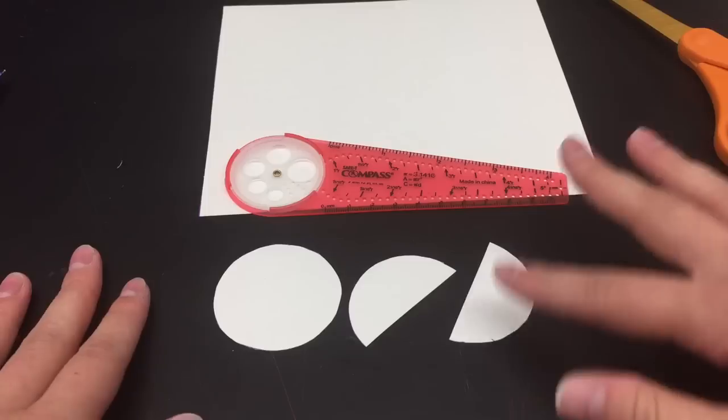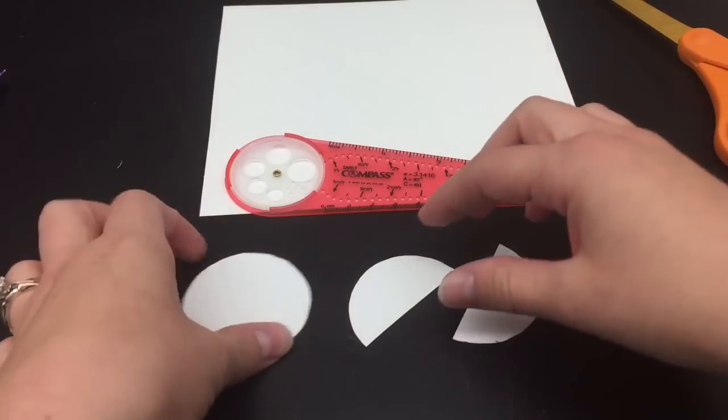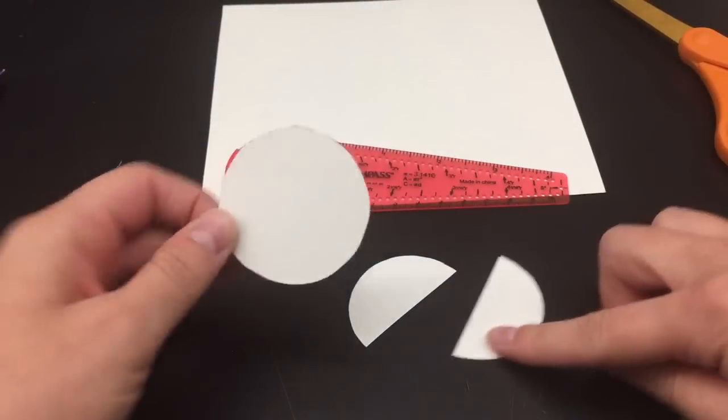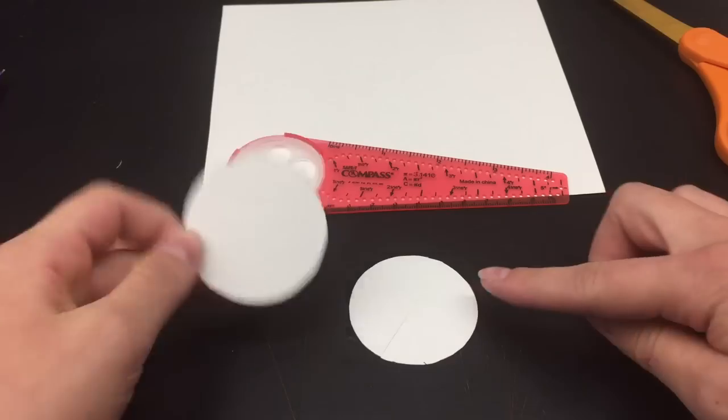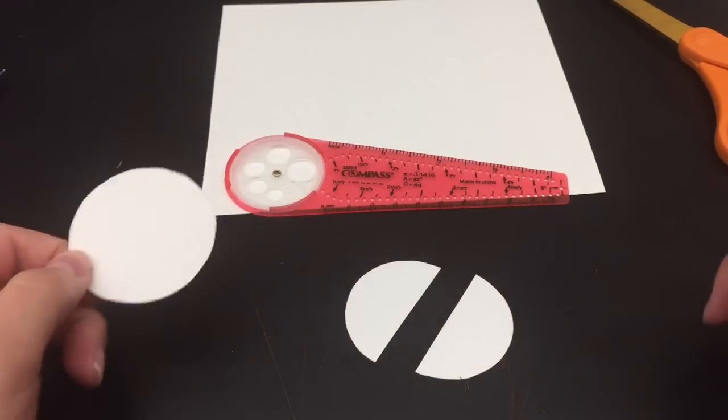This video is going to show you how to make a half of a ball. For the half of a ball, you need one full circle and then one circle that is the exact same shape that is cut in half.